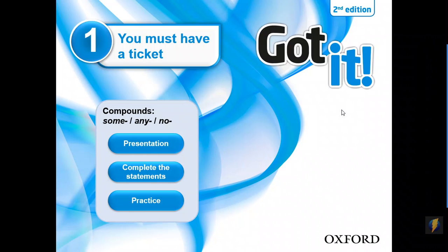Unit number one, you must have a ticket. Compounds: SOME, ANY and NO.